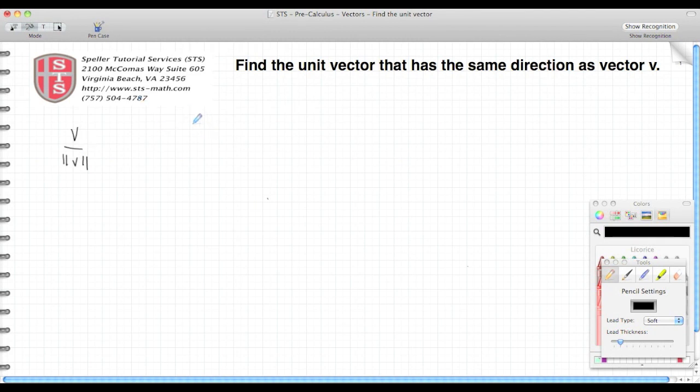Our vector we're starting with is 8i minus 6j. That's going to be our numerator, and then to find the magnitude or length of that vector...